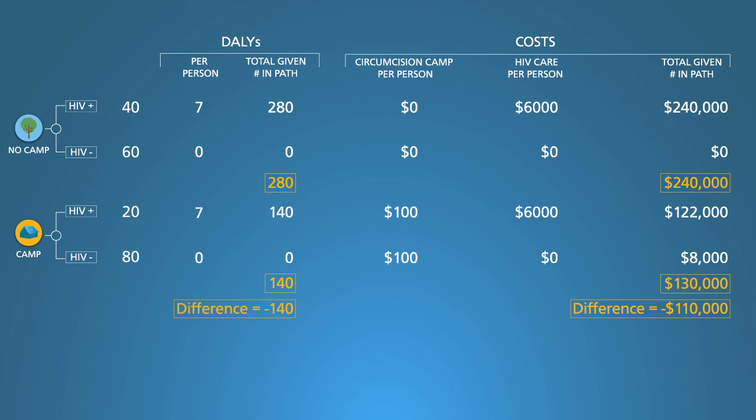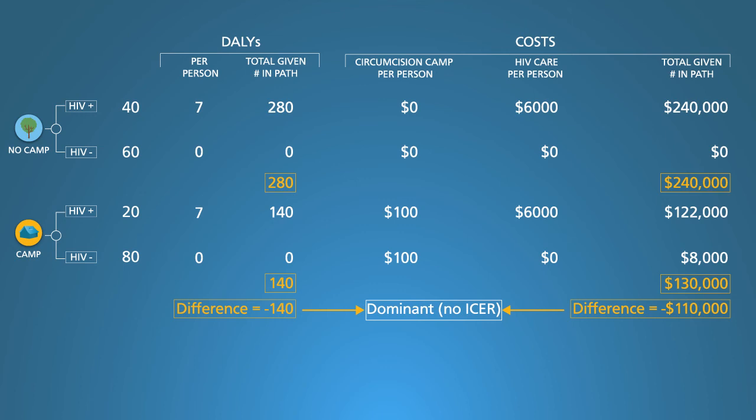Thus, the camp saves $110,000 per 100 participants. Since the camp reduces DALYs and also saves money, we say it is dominant — both better and cheaper. By the way, the best evidence for male circumcision definitely supports the idea that you save more money than you spend. Thus, as we can see in this table, male circumcision is an efficient strategy.